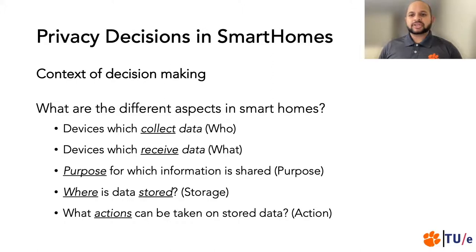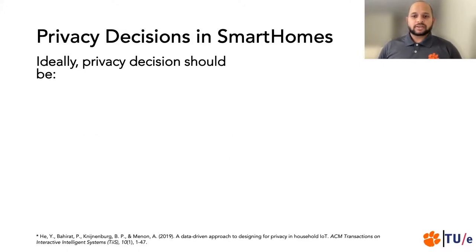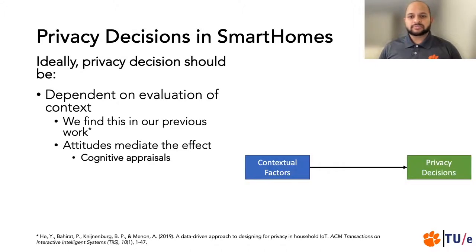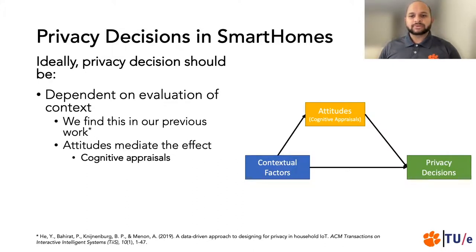Privacy decisions, especially in smart homes, depend on various contextual factors, such as which devices collect data, which devices receive that data, and how all that data gets stored. Ideally, we want privacy decisions of smart homes to be based strictly on these contextual factors. Our previous research found this to be true. Additionally, we also observed that the effect of contextual factors on privacy decisions is mediated by attitudes — these attitudes are cognitive appraisals towards contextual factors. Ideally, we also want the privacy decisions to be free from heuristics such as defaults and framing.